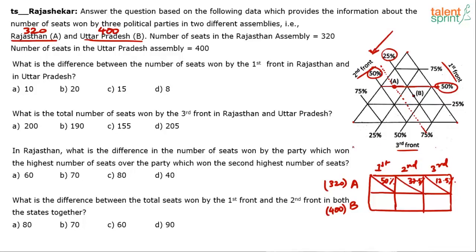You can verify by drawing a line for the Third Front through point A, parallel to the Third Front lines. It falls between 0% and 25%, exactly at 12.5%. So for assembly A: First Front = 50% of 320 = 160 seats; Second Front = 37.5% (which is 3/8) of 320 = 120 seats; Third Front = 12.5% (which is 1/8) of 320 = 40 seats. Check: 160 + 120 + 40 = 320. Done.